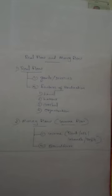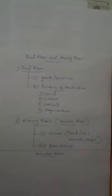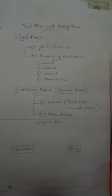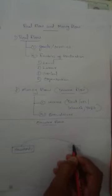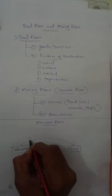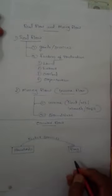Goods and services and factors of production together define real flow. These flows can be understood with the help of a circular flow. For this purpose we are considering a two-sector economy, which has only two sectors: households and firms.